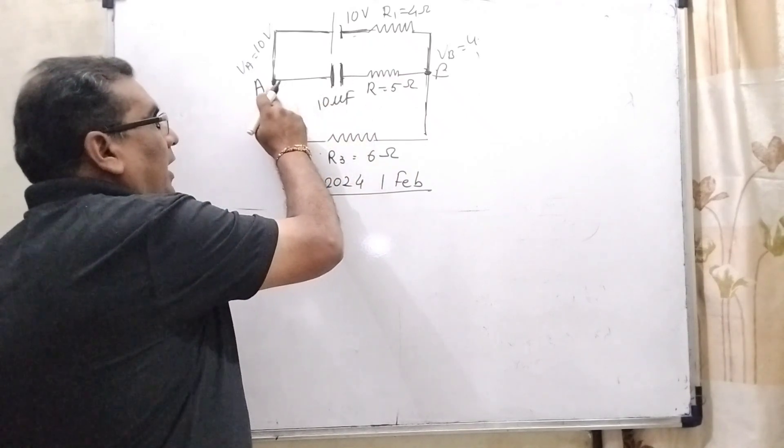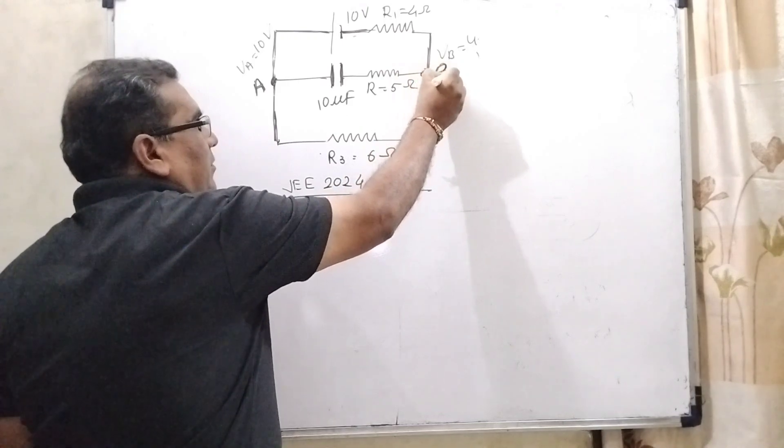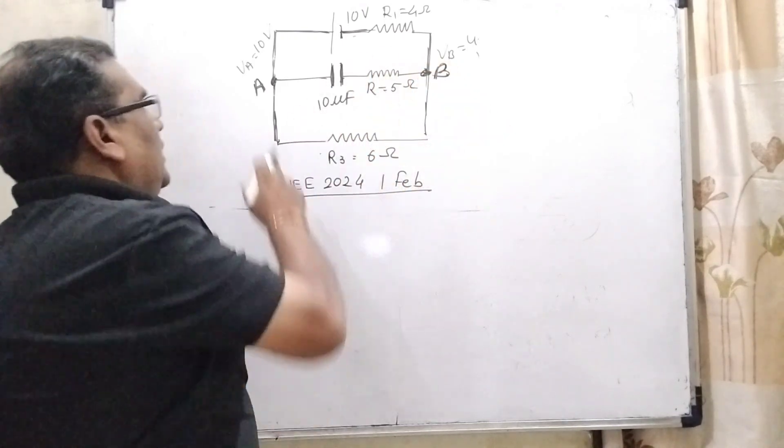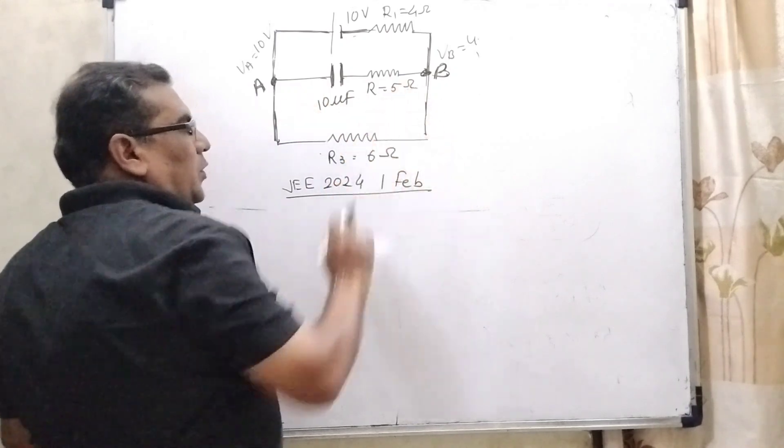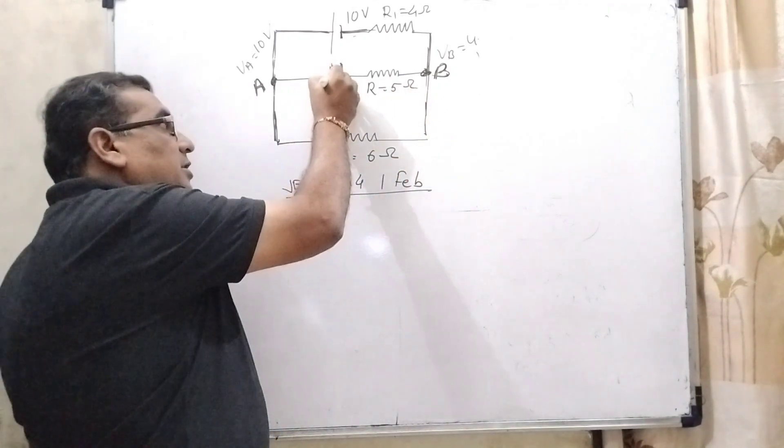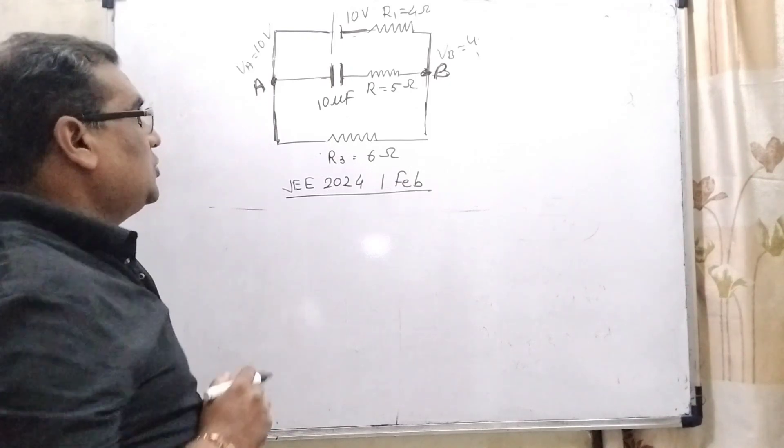So here at the point, we have labeled that A and here we have given the name that is B. So in the AB, there is no amount of current will flow. Only this capacitor becomes charged and we have to calculate charge in micro coulomb.